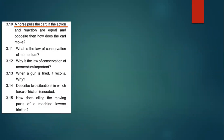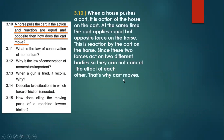Question 3.10 — a horse pulls a cart; if action and reaction are equal and opposite, how does the cart move? When a horse pushes a cart, it is the action of the horse on the cart. At the same time, the cart applies an equal but opposite force on the horse — this is the reaction. Since these two forces act on two different bodies, they cannot cancel each other's effect, and that is why the cart moves.